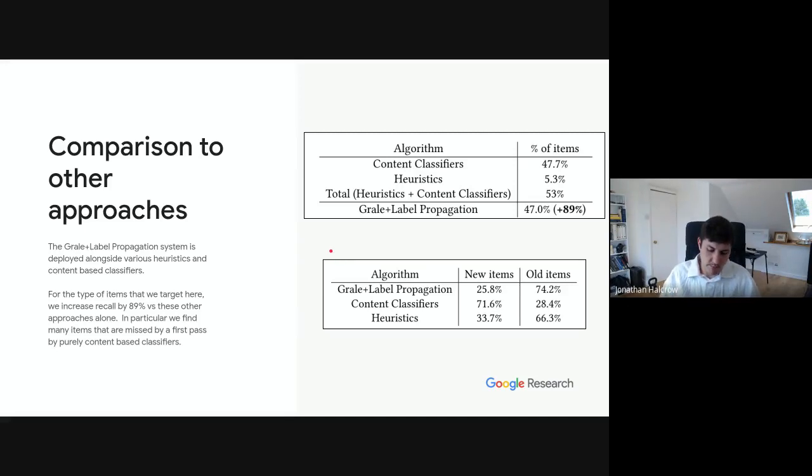One other aspect of the system is that the content classifiers and the heuristics generally run earlier in the pipeline and have a first shot at classifying items. And so the content classifiers in particular find mostly new things, whereas GRAIL and label propagation system is finding a lot of items that are older and were missed by the earlier systems.